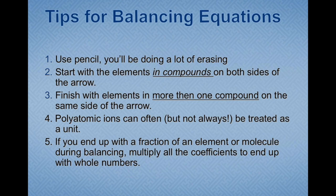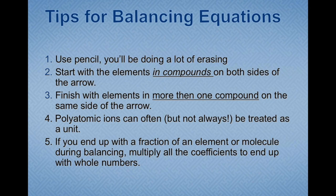Fourth, polyatomic ions can often, but not always, be treated as a unit. They often swap places with another metal ion, if it's a negatively charged polyatomic ion. However, there are reactions where polyatomic ions are formed or broken, so this is not always the case — but it holds for many reaction types. Fifth, if you end up with a fraction when balancing, multiply all the coefficients to end up with whole numbers. I'll show an example of that in a couple of minutes.